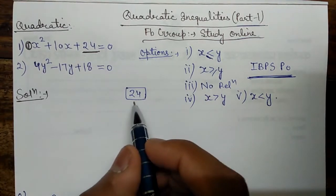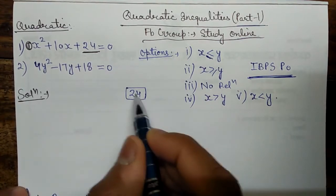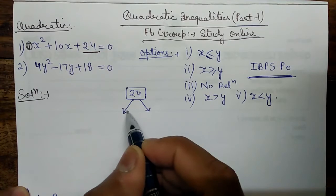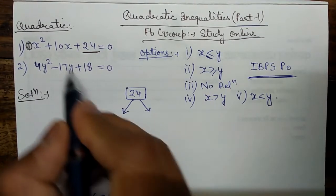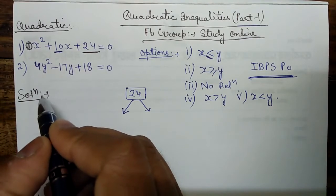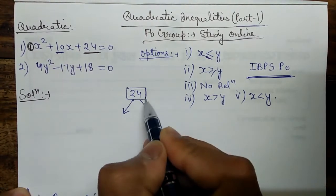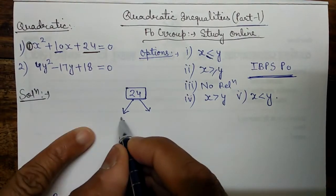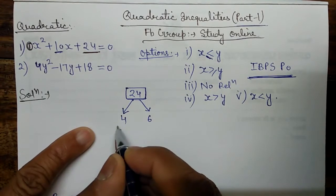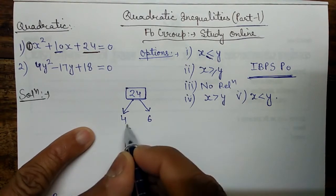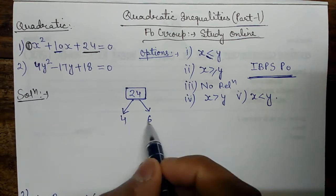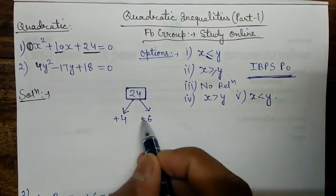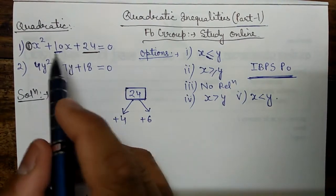Now we have to factor 24 in such a way that by adding the factors we get the coefficient of x, and by multiplying them we get 24 again. The factors are 4 and 6 — adding gives 10, multiplying gives 24. That means the factors are +4 and +6.